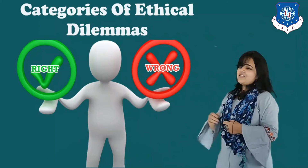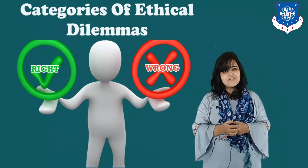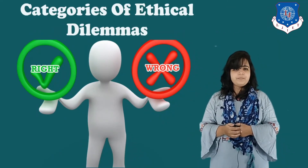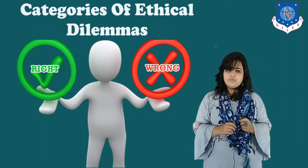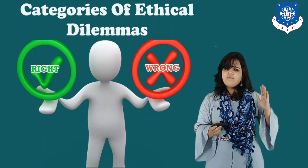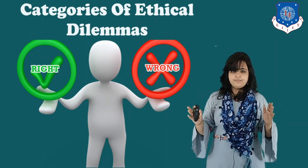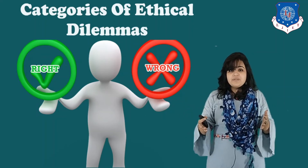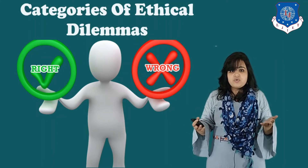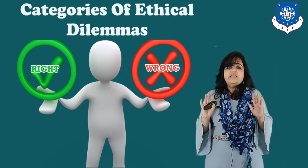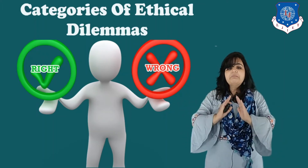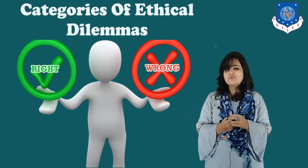Moving further, let us understand the different categories of ethical dilemmas. Ideally, ethical dilemmas are of two categories. The first category is right or wrong — here there are only two options available: one is the right option and one is the wrong option. Like legal matters — whether you should breach confidentiality or breach privacy protection laws. These are ethical dilemmas where one option is right and one is wrong, with no in-between options and no many choices to select from.